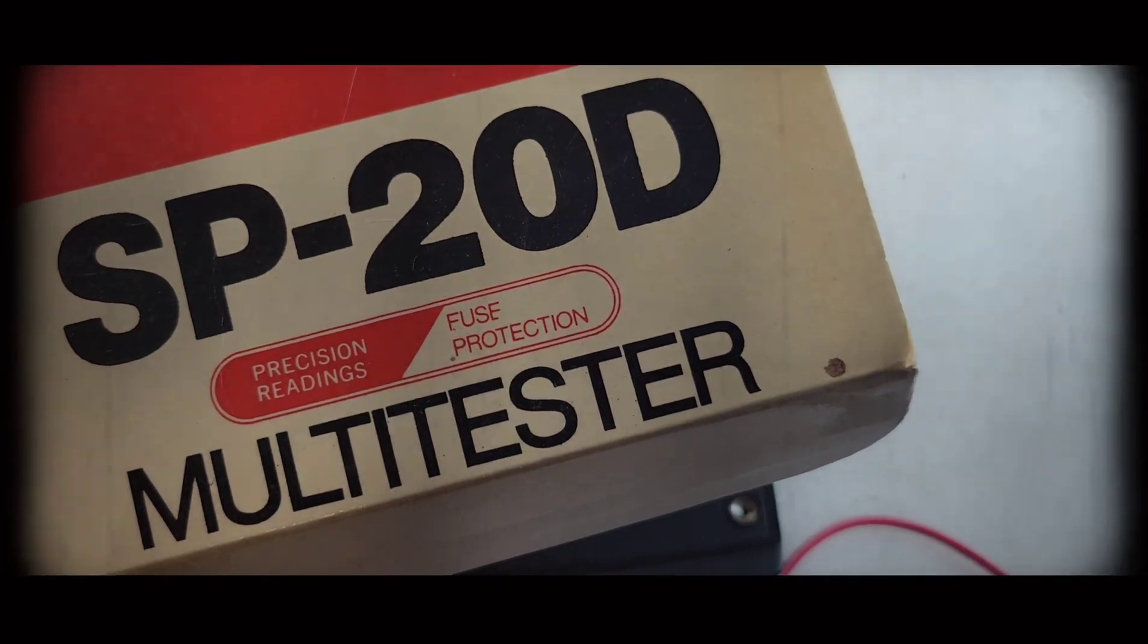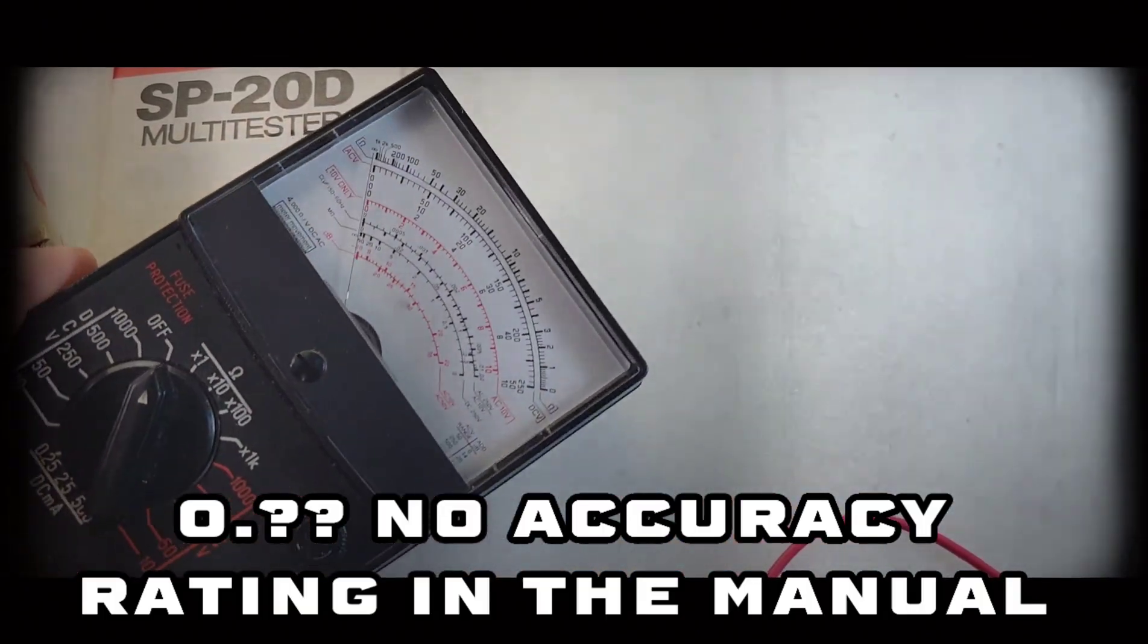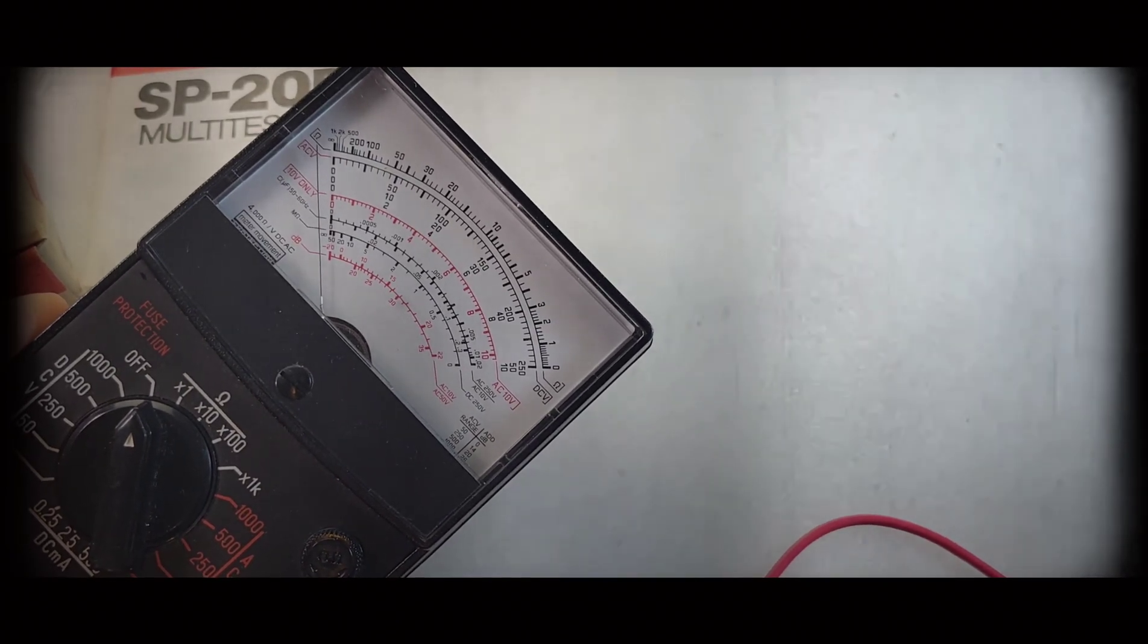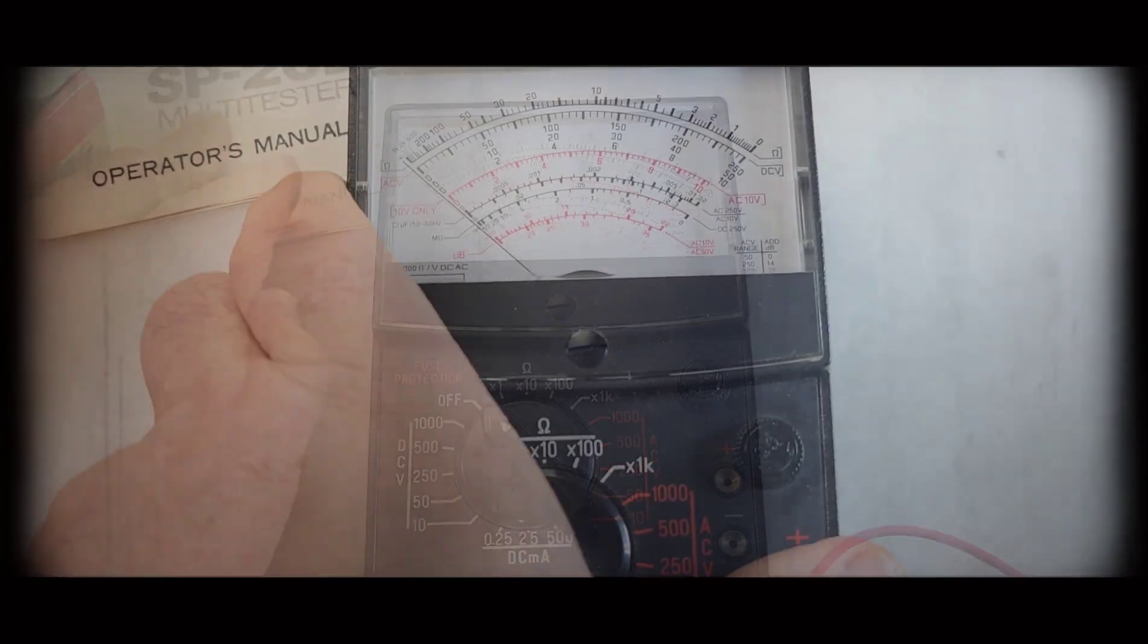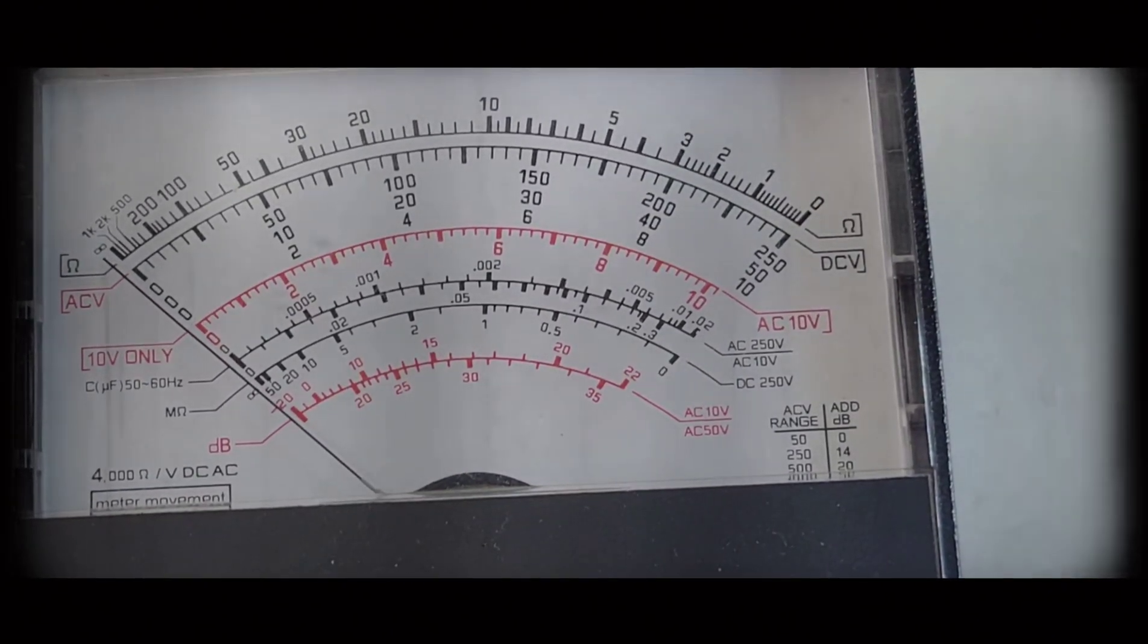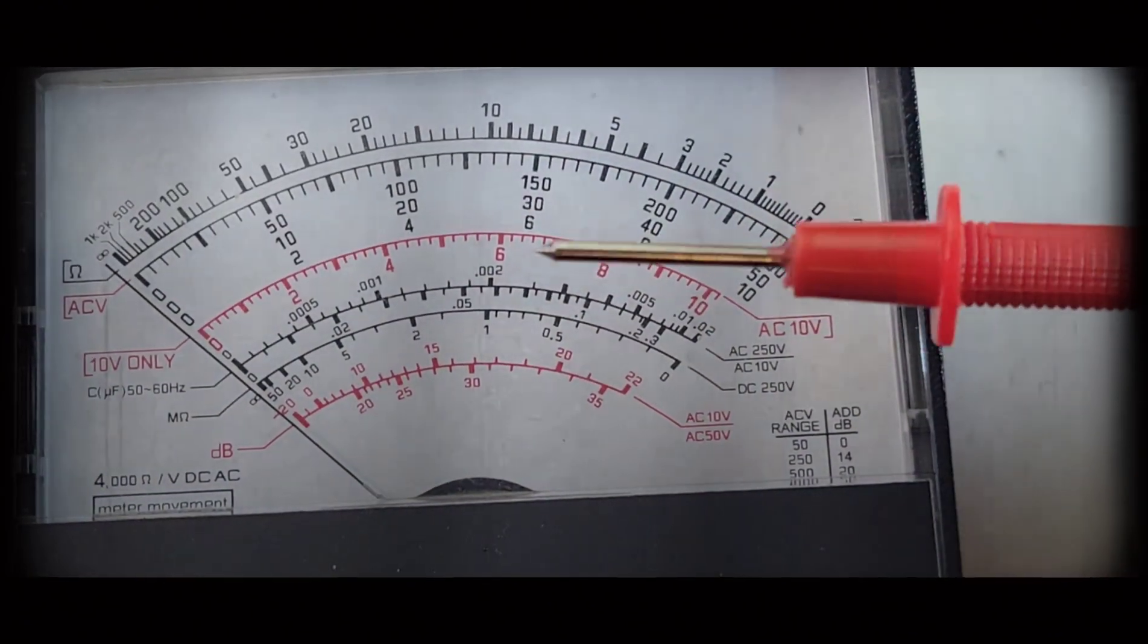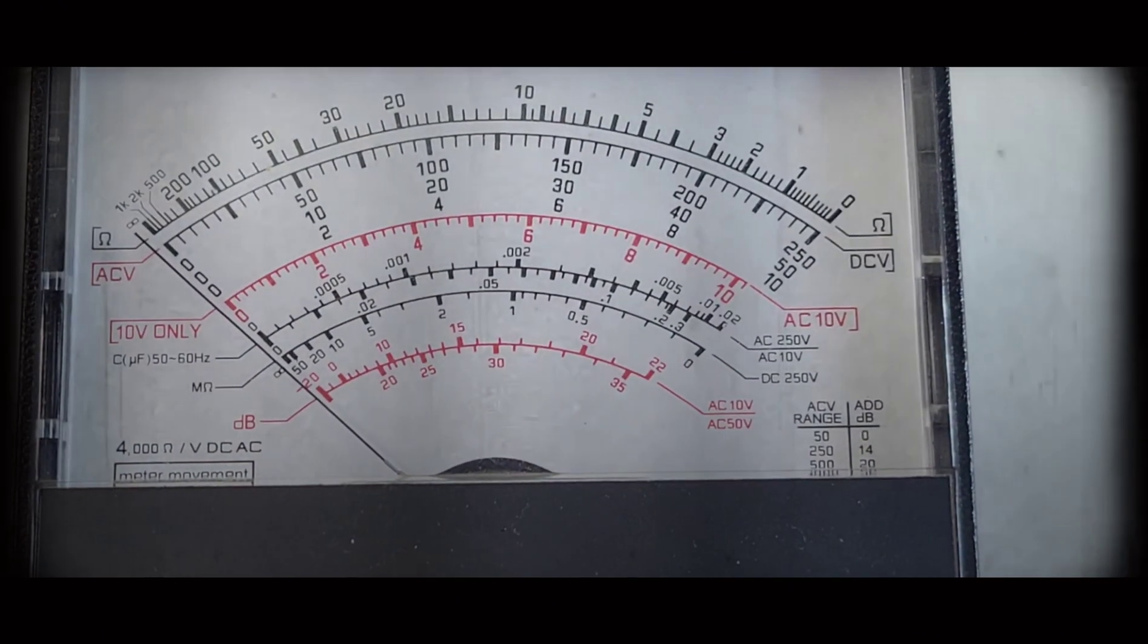So, according to the SP20D, this is a precision reading fuse-protected multi-tester. Oh. Now, the meter itself, I think there's a little bit of dampening on the needle itself. Not a bad display. Not a bad display. Actually, fairly verbose, which is really kind of nice when it comes to these older analog style screens. Now, you're going to get a little bit of parallax because we don't have a mirror inlay behind the needle, but that's okay. Hey, this was cheap to begin with.